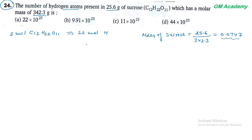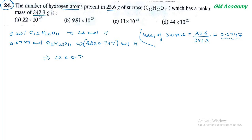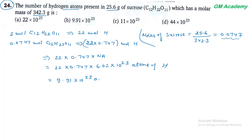1 mole sucrose में 22 moles hydrogen हैं, तो 0.0747 mole sucrose में hydrogen के moles = 0.0747 × 22 = 0.747 mol। Number of hydrogen atoms = 0.747 × 6.02 × 10²³ = 9.91 × 10²³ atoms. Option B correct answer हो जाएगा।